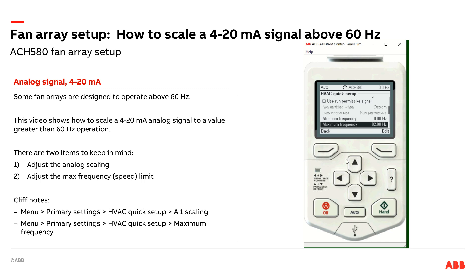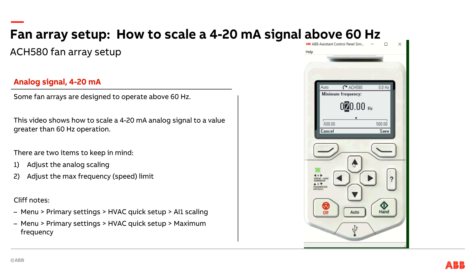If I wanted to, say, in hand mode, I also want to put a limit in here. A little fun fact — there's a minimum frequency. Let's say this air handler, they never wanted to run below 20 hertz. I can set a minimum frequency in here, so even if somebody put it in hand and tried to slow it down, the slowest this thing would ever run is 20 hertz, short of them pressing the off button. So again, 4 to 20 milliamps equals 0 to 82 hertz on an ACH 580 drive for a fan array application. Thank you.